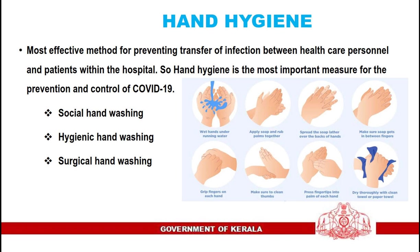Hand Hygiene is the most effective method for preventing transfer of infection between healthcare personnel and patients within the hospital. It is also the most important measure for the prevention and control of COVID-19. The three types of hand washing are Social Hand Washing, Hygienic Hand Washing, and Surgical Hand Washing.